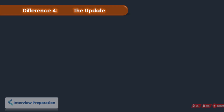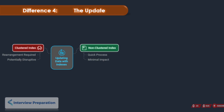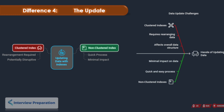Let's see the difference for updates. Updating data with a clustered index is like moving furniture in a small apartment — it can be a bit of a hassle because you might have to move other things to get to the piece you want to move. Non-clustered indexes, on the other hand, are like adding a bookmark to a book: it's a quick and easy process that doesn't affect the rest of the book. So, if you're constantly updating your data, a non-clustered index might be a better choice. But if you don't need to update often, a clustered index can be more efficient.